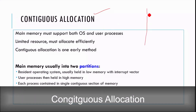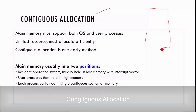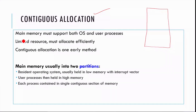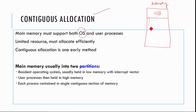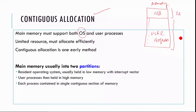We are talking about main memory, which means random access memory. Main memory must support both the operating system and user processes. That's why we divide the complete memory into two sections: one section for the operating system, and the rest for user programs. This area is called the system area and the rest is called the user area.